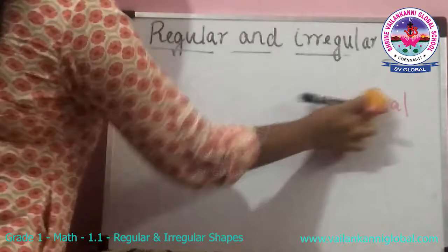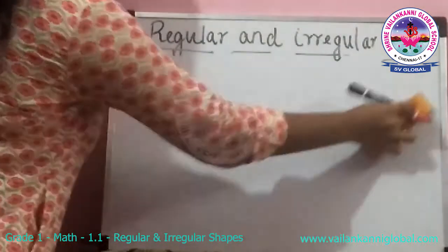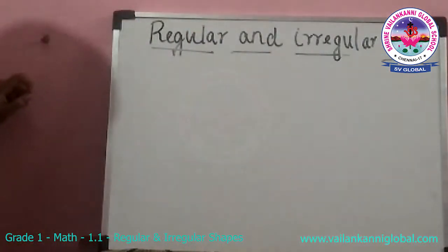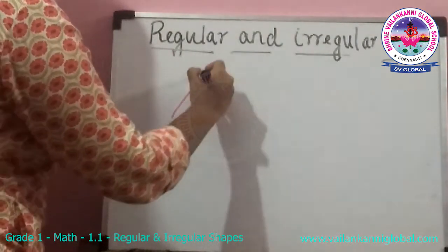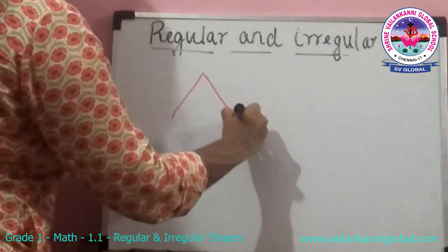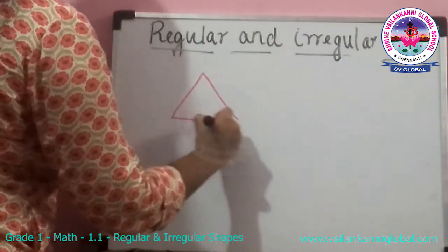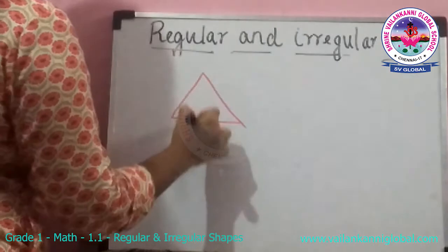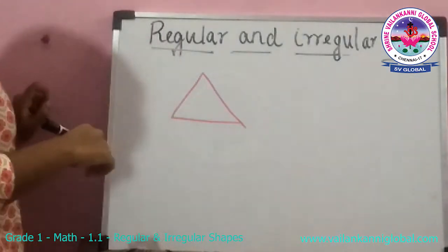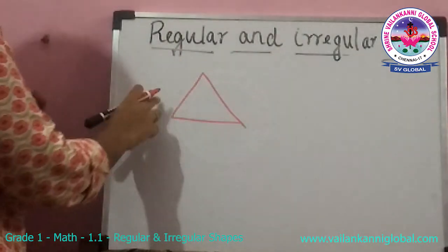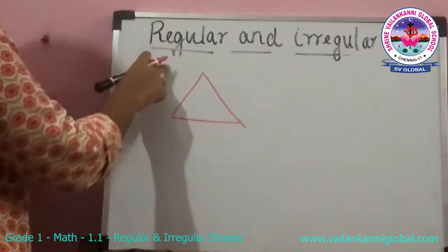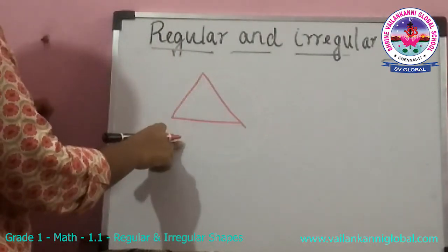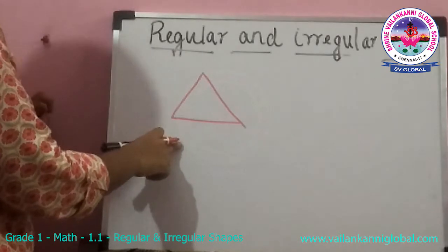For example, this is a triangle. In this triangle, this side, this side, this side — all the sides are equal.